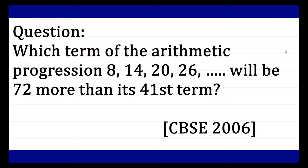Let us see how we are moving ahead and what we are doing in order to find out the solution for this. The question asks us to find out which term of the arithmetic progression will be 72 more than its 41st term. In this type of question, we are going to first of all find out the 41st term.